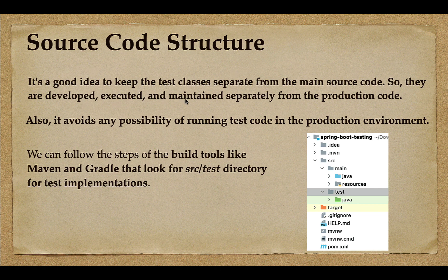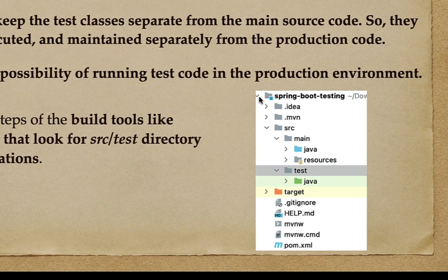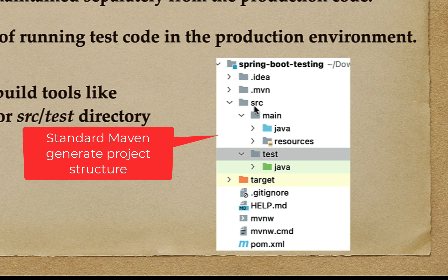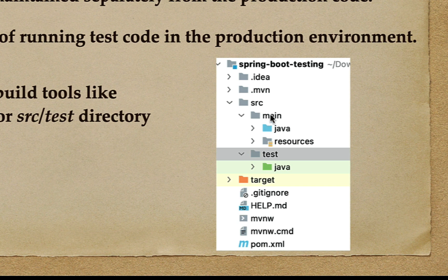Test classes should be developed, executed, and maintained separately from the production code. This avoids any possibility of running test code in the production environment. We have build tools in Java like Maven or Gradle, and we can use the standard project structure they generate. For example, Maven follows a structure where within the src folder, all production code goes under main, and test classes go under the test folder.